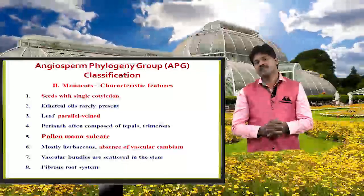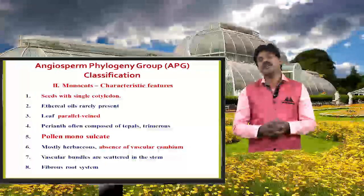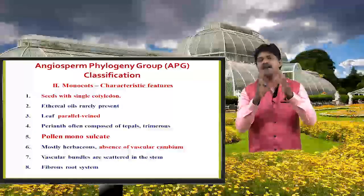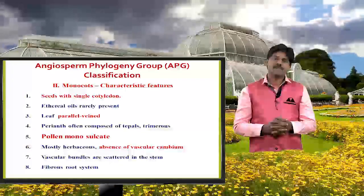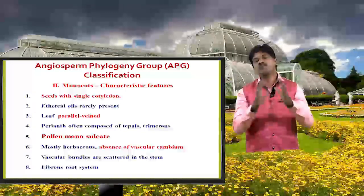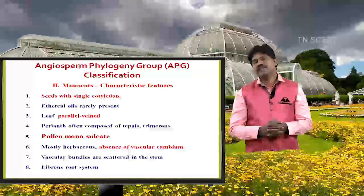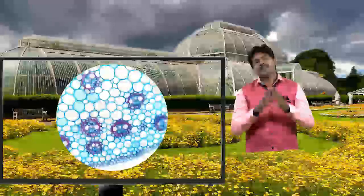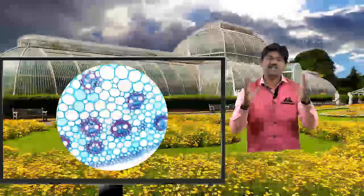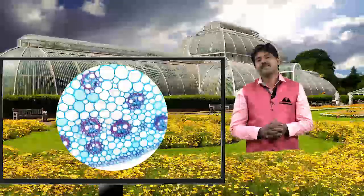The characteristic features of monocots are: single cotyledon, parallel venation, trimerous flowers, monosulcate pollen grain, cambium is absent and therefore mostly herbaceous. The vascular bundles are of closed type and arranged in a scattered manner.